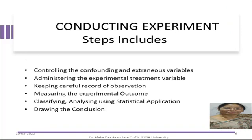The next phase is the execution phase — conducting experiments. As per plan, the confounding and extraneous variables are controlled. After controlling these, the researcher administers the experimental or treatment variable, and at the same time carefully keeps a record of observations. This includes measuring the experimental outcome. Compilation of raw data related to the treatment group and the control group is important. After analyzing, the data should be compared and condensed to a usable form after classifying, analyzing, and applying statistical methods.